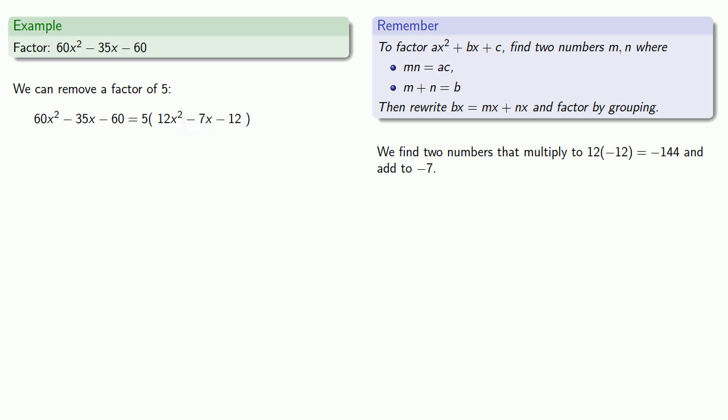Again, there are fewer numbers that multiply to something than add to something. So let's find numbers that multiply to -144, and so our possibilities are listed.